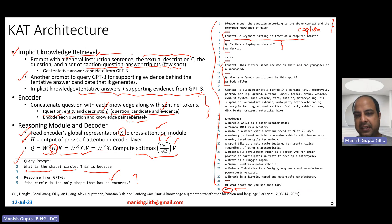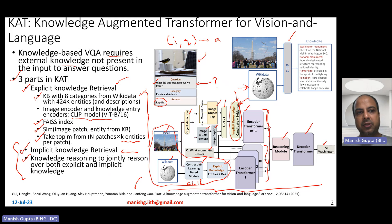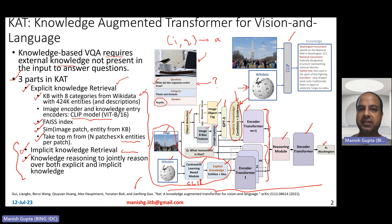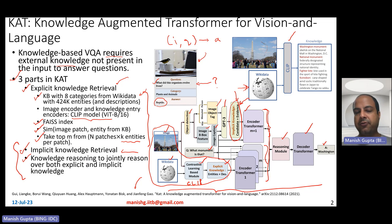So you have three parts: explicit knowledge retrieval, which uses the image to find evidence pieces from Wikidata to augment; implicit knowledge retrieval, which processes the image to get text and asks GPT-3 what could be a good answer; and the third step is knowledge reasoning and decoding using cross-attention.